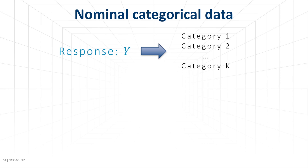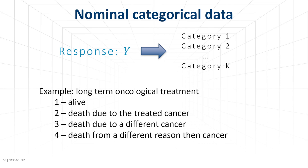Binary categorical data with only two options is actually a special case of nominal categories. We can have data with several categories describing different choices or outcomes. For example, in an analysis of the effects of a long-term cancer treatment, categorical data could describe causes of death: 1 means a patient is alive, 2 corresponds to death from the treated cancer, 3 from another cancer, and 4 means death for a reason other than cancer. Modeling in this case may be useful to test if exposure to the treatment is a significant predictor of the cause of death.